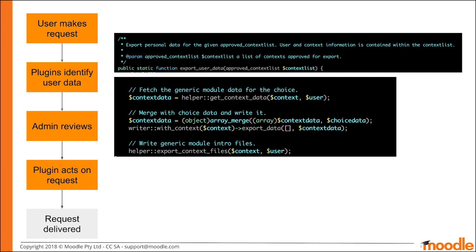Exporting is performed using the writer, and all data is written to a specific context. There are several writer functions to use, and the functions that you will need will depend on the kind of data that you store and how you store it. In most cases, you will want the ExportData and ExportUserFiles functions. You may also need to export additional metadata, related files, or maybe files in a custom format.